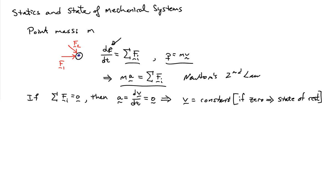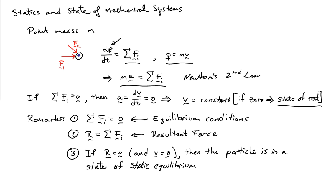If the sum of the forces acting on the particle equals zero, then the acceleration is zero, meaning the velocity is constant. If that constant is zero, then we have a state of rest — static equilibrium. The sum of forces being zero is called the equilibrium condition. We define the sum as the resultant force R, and the resultant force equaling zero along with velocity equaling zero means the particle is in a state of static equilibrium.